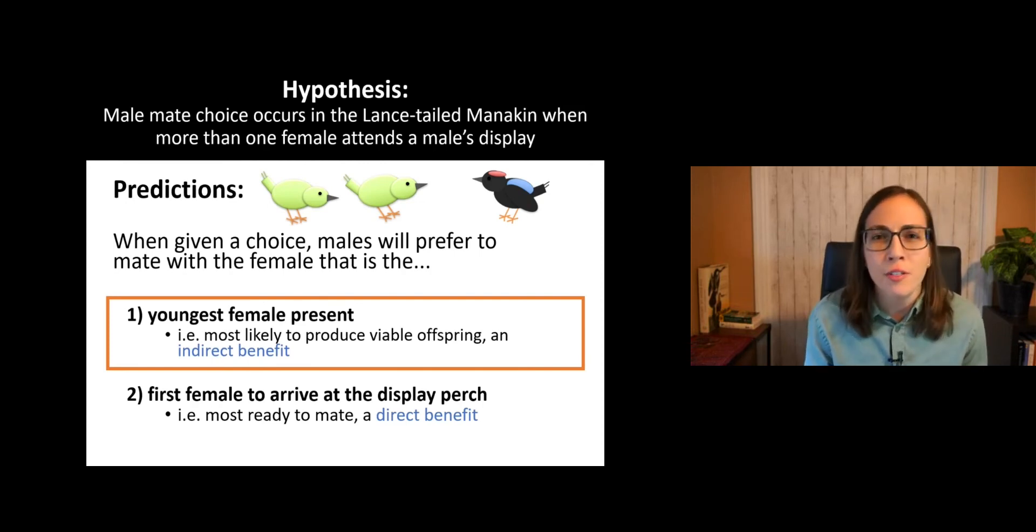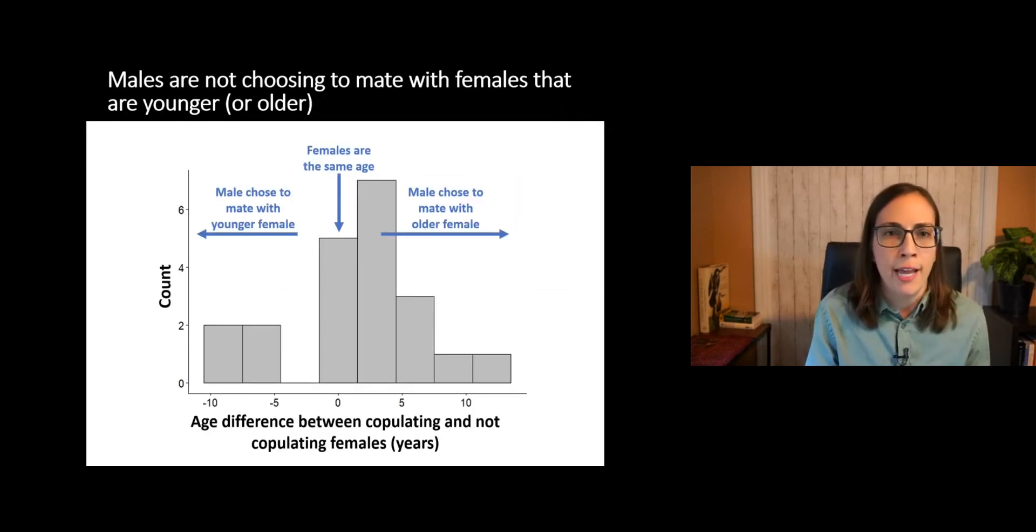Alright, so delving into our results, we first sought to see if males preferred to mate with the youngest female present of the two females at the display. So this is just a histogram to visualize the data. And on the x-axis, we have the age difference between the female that mated and the age of the female that did not mate in years. So a number on the right of this graph represents situations where the male chose to mate with the older female of the two. And those on the left of the graph represent those situations where the male chose to mate with the younger female of the two.